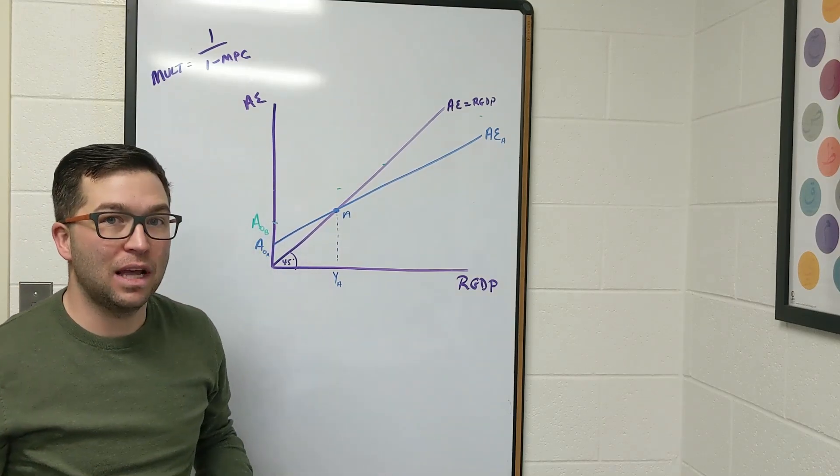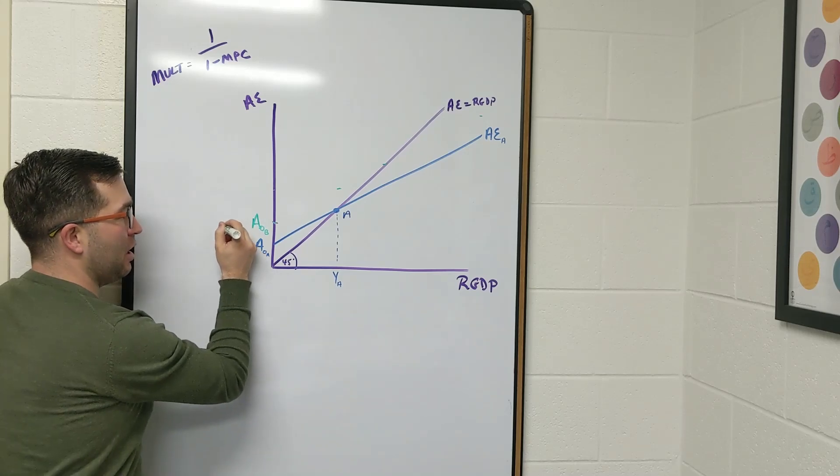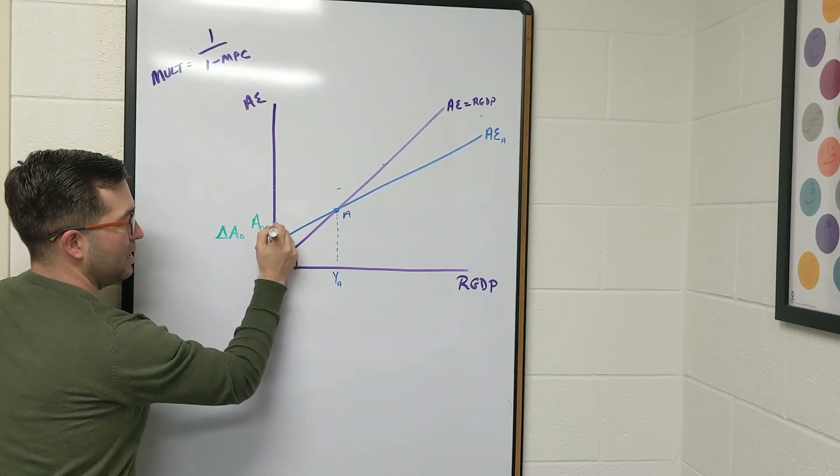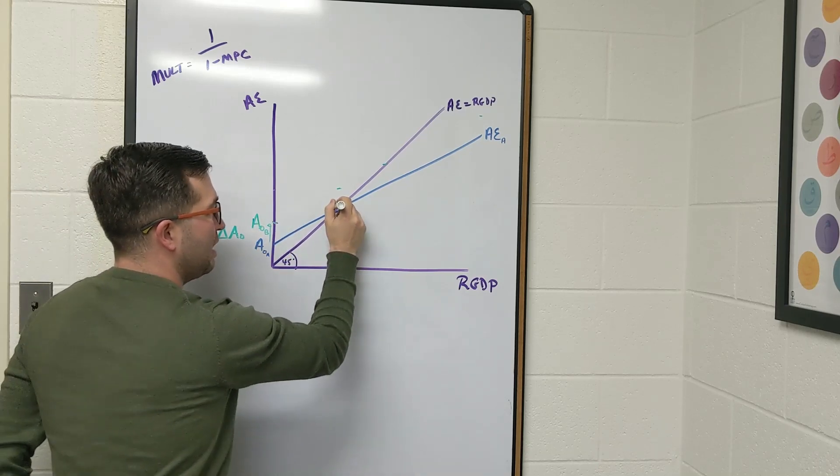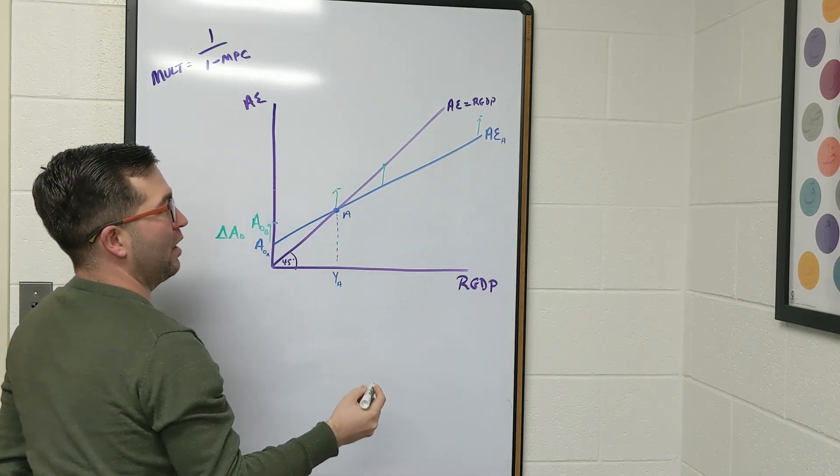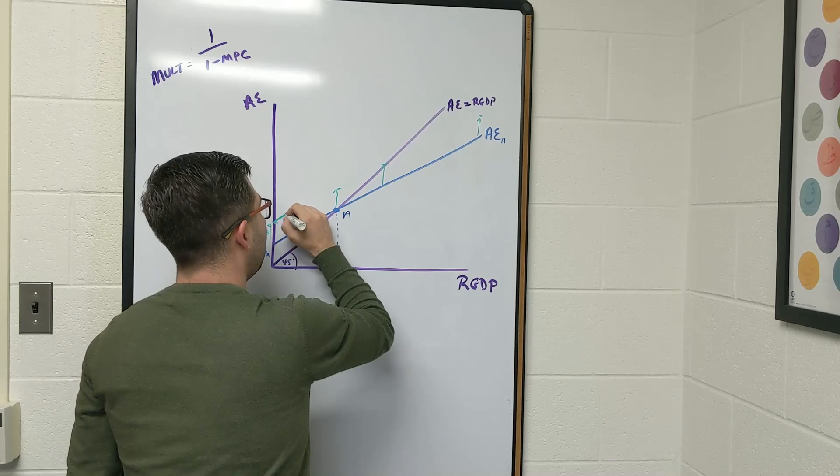All I have to do now is connect these lines and it's going to show me exactly what this line would look like. So we have this change in autonomous spending, right? So it goes from here to here. So we see this increase, which means we see everything shift completely up to get a new aggregate expenditure line. Let me connect those and we can see what it looks like, best as possible.